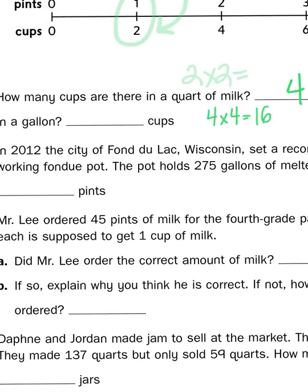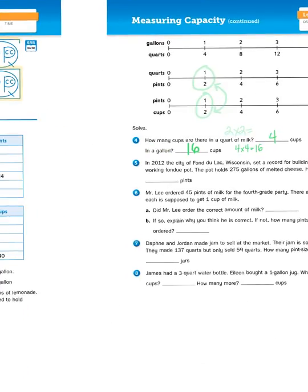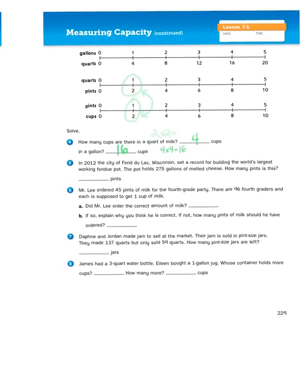Okay, so if you can skip count by 2s and 4s, you can convert between customary units of capacity. Now, the problems 5 through 8 are all story problems that require you to do just that. Let's take a look at one right now.